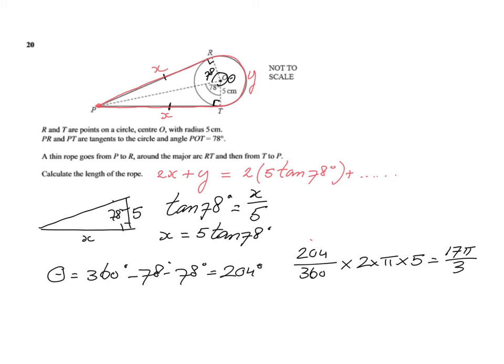I'm going to leave that in terms of pi for now. Because if I plug it in my calculator now, I'm going to get a lot of decimals, and I want to avoid those decimals. I'm going to write that here: 17 pi over 3.